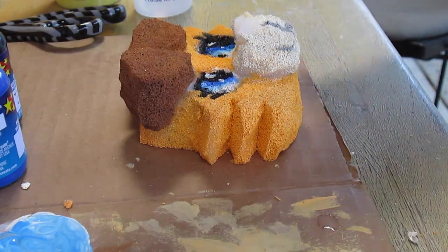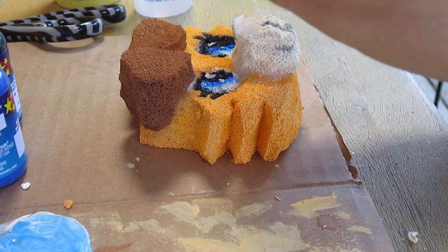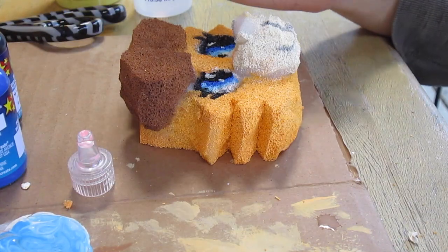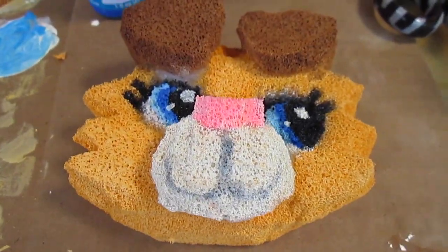Now I am going to paint the pupil black and paint on the eyeliner and eyelashes. I went ahead and painted the two white dots in the eyes for the shine with white. And now I am going to paint the nose with some pink. And now I am finished.